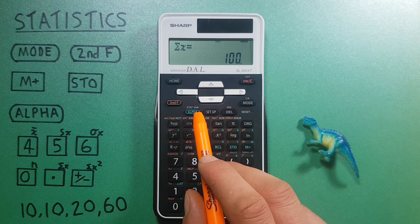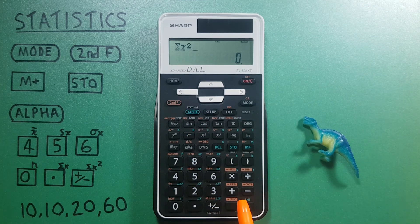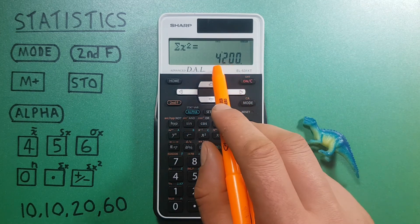And finally, if we use the positive negative key, this gives us the sum of squares of the data.